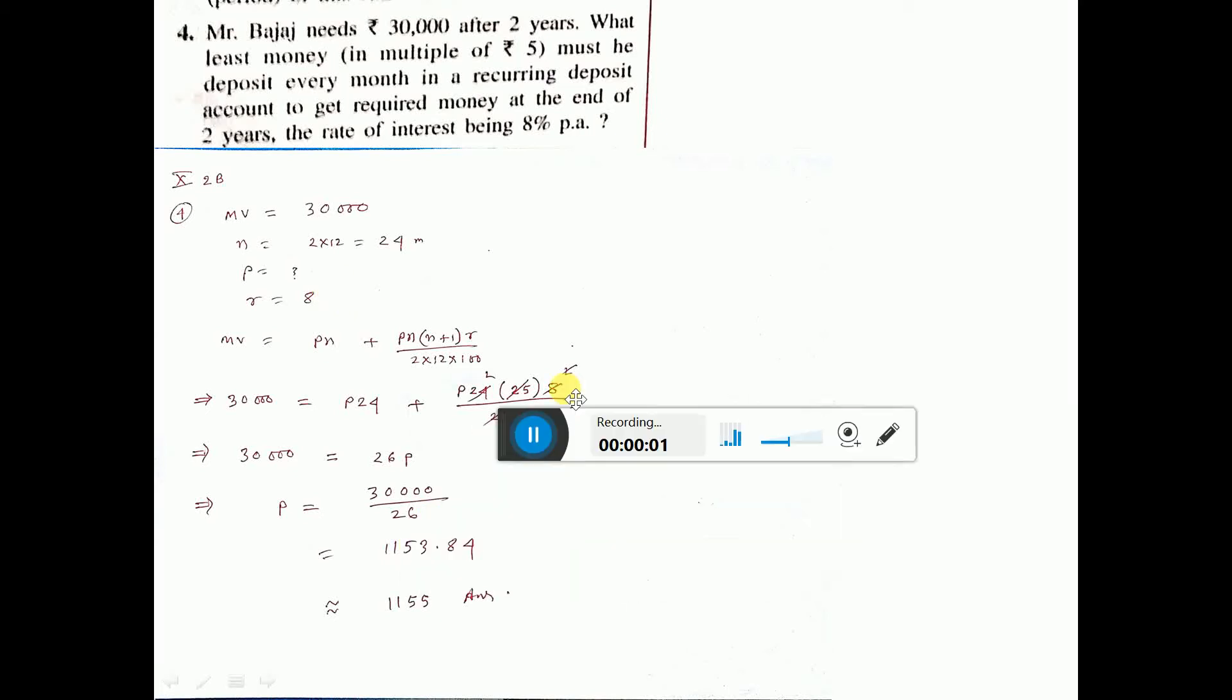So this is problem number four. Mr. Bajaj needs ₹30,000 after two years. What is the least money in multiple of 5 that must be deposited every month in a recurring deposit account to get required money at the end of two years, the rate of interest being 8% per annum?